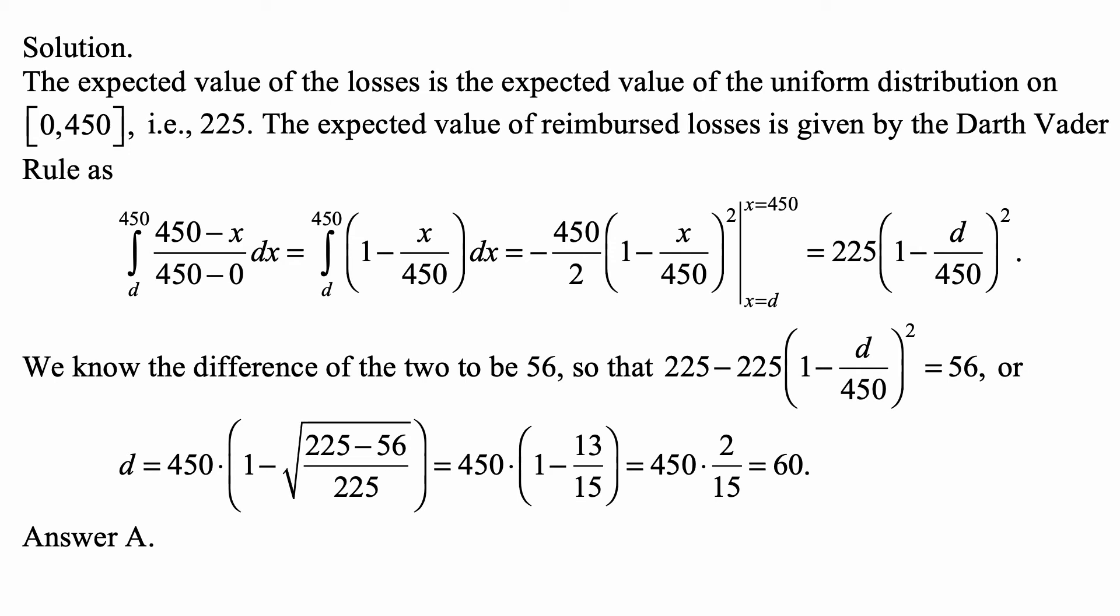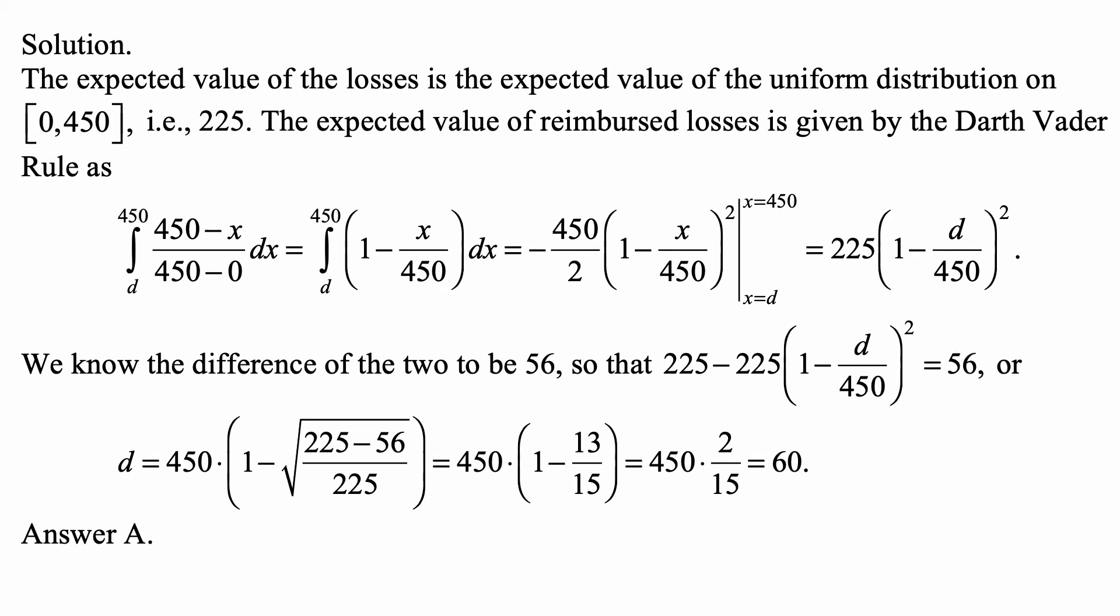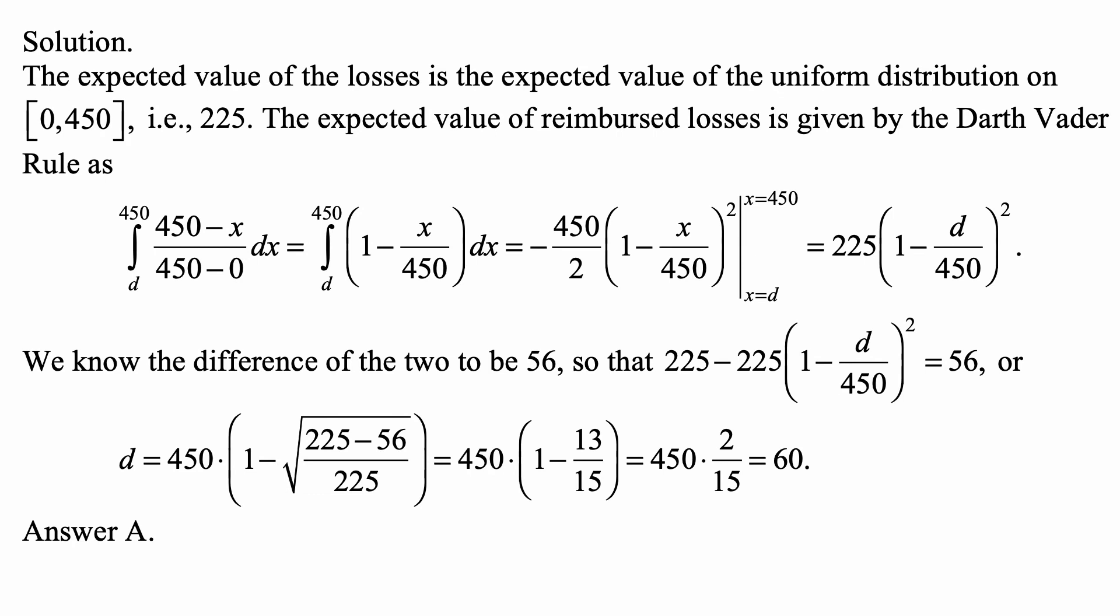This is evaluated from x equal to D to x equal to 450. Of course, when x is equal to 450, this is equal to 0. So we only need to subtract the value of this at D, but minus minus makes it a plus, so two minuses make it a plus. And this is simply 450/2, which is 225, times (1 - d/450) squared.